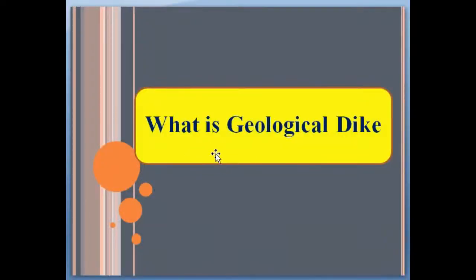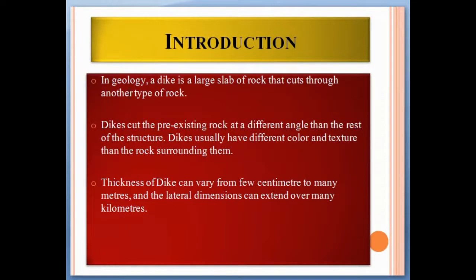Today we talk about what is a geological dike and how it forms. In geology, a dike is a large slab of rock that cuts through another type of rock. Dikes cut the pre-existent rock at a different angle than the rest of the structures, so dikes usually have a different color and texture than the surrounding rock. The thickness of a dike can vary from a few centimeters to many meters, and the lateral dimension can extend over many kilometers.